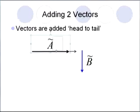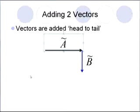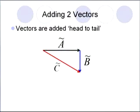So take vector a, the head of vector a goes to the tail of vector b, and that will result in vector c pointing back towards b. Vector c represents the addition of vector a and b.